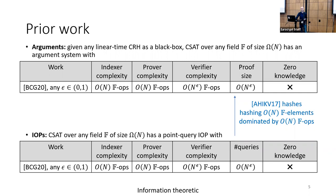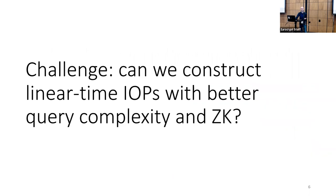The question for us was: can we look at the information-theoretic IOP construction and improve the verifier complexity, query complexity, and add zero-knowledge, so that we can apply this hashing transformation and get the argument we would like? That was our main challenge — reducing the query complexity and verifier complexity while adding zero-knowledge.